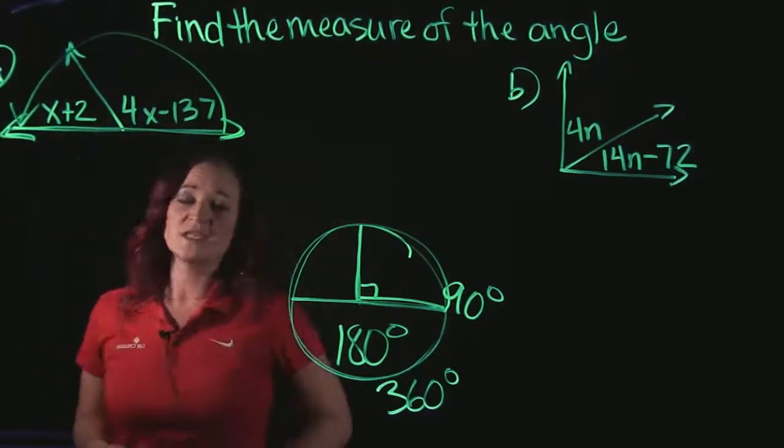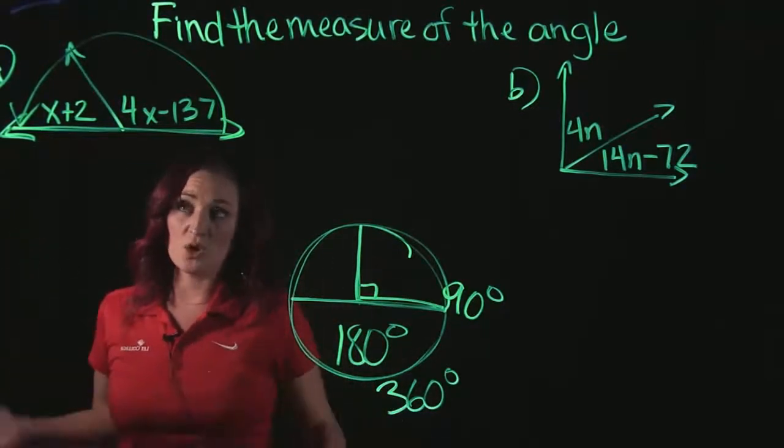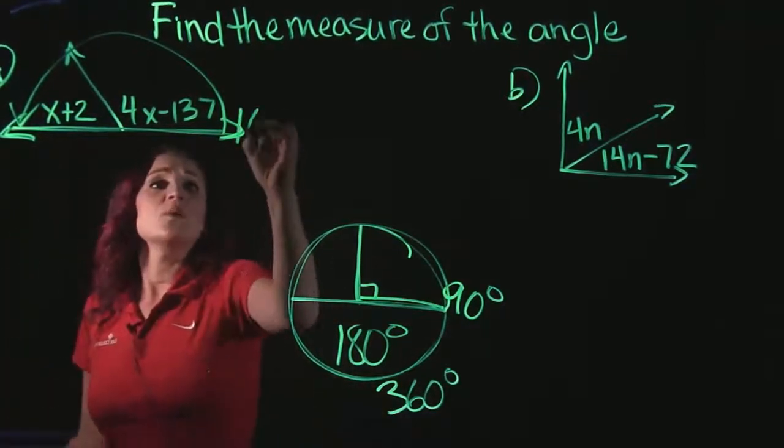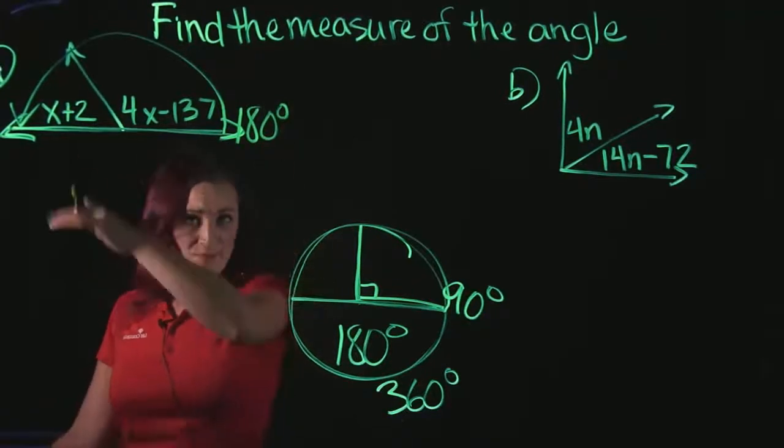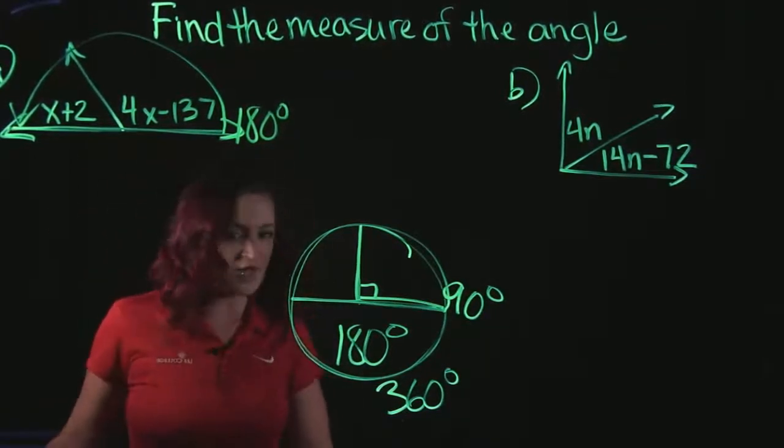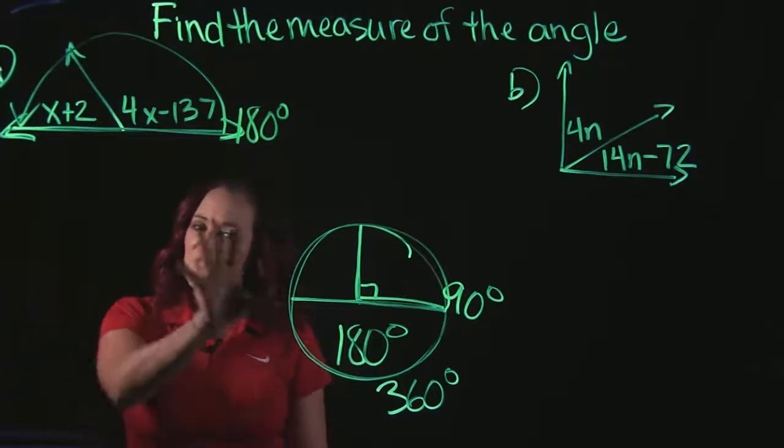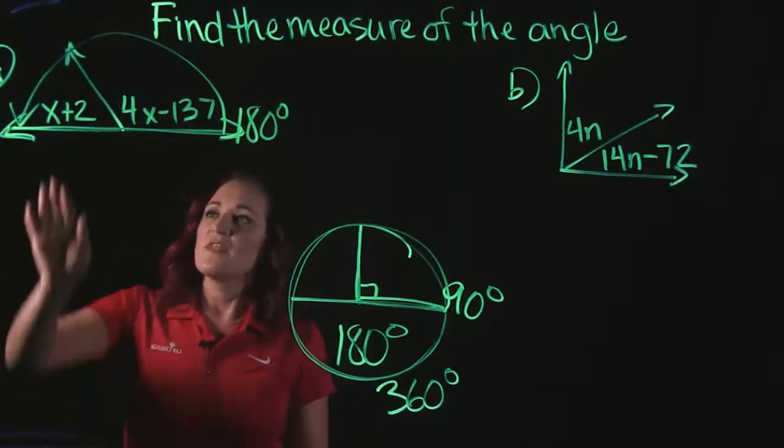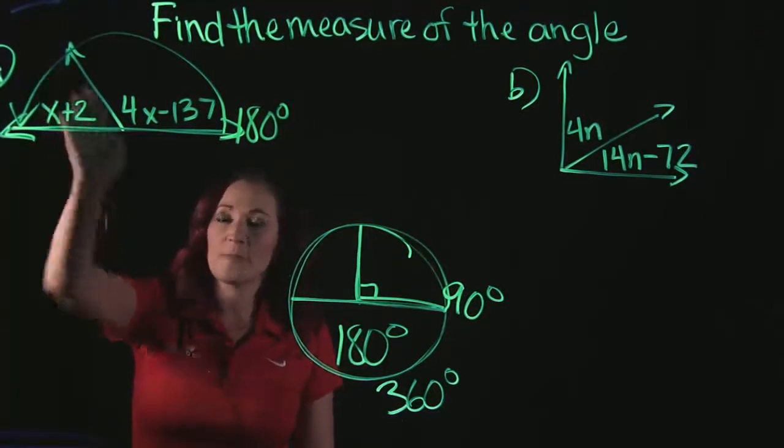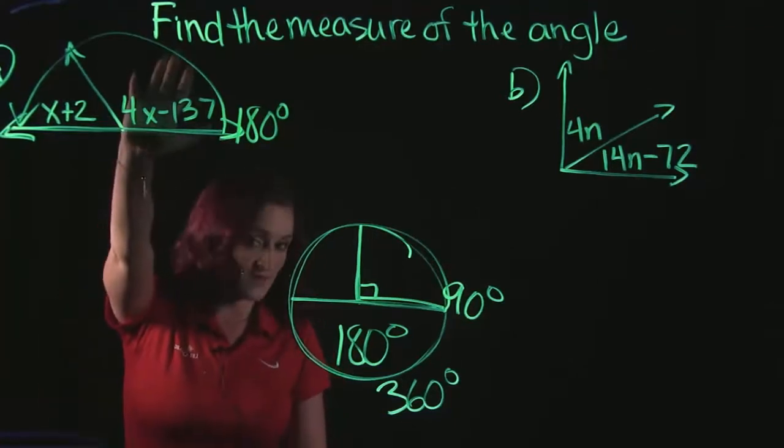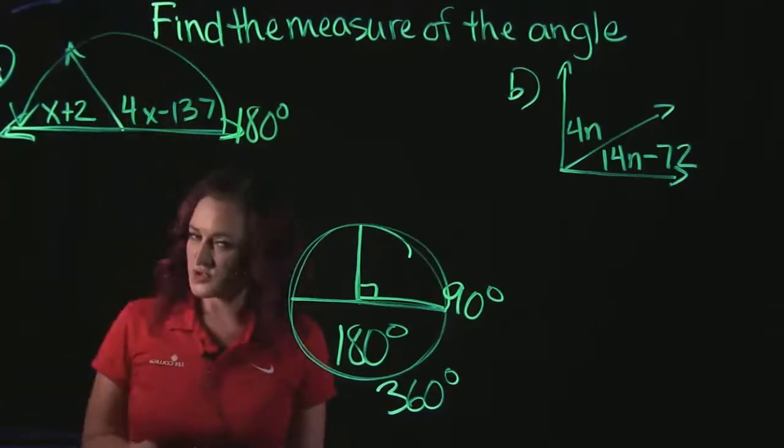So these two angles here are within a straight angle, a semi-circle. And what we know is that a semi-circle has a total of 180 degrees. So if these two angles make up that 180 degrees, that means that this angle over here plus this angle over here have to add up to 180 degrees.